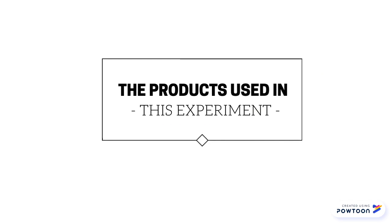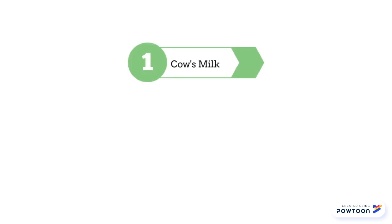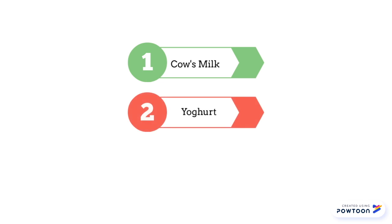In this experiment, three different products are used and each product represents a category. The food products used are cow's milk, yogurt and whipping cream.